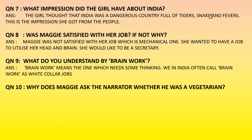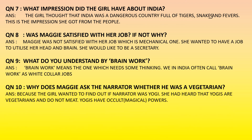The last question for today: why does Maggie ask the narrator whether he was a vegetarian? Because the girl wanted to find out if the narrator was a yogi. She had heard that yogis are vegetarians and do not eat meat. Occult means magical powers. That is why she wanted to know whether the narrator was a vegetarian or was a yogi, and the yogis are vegetarians and do not eat meat and have occult or magical powers.